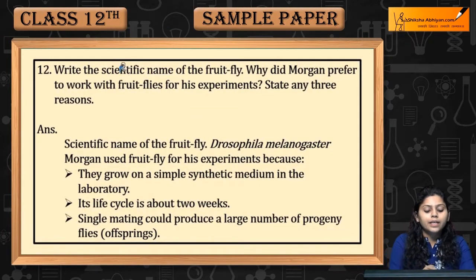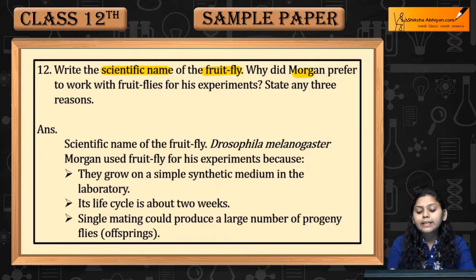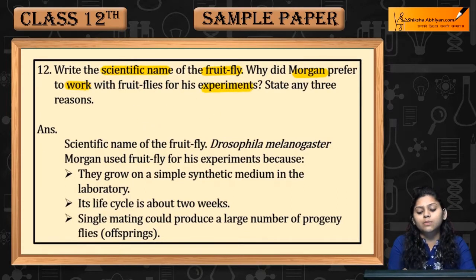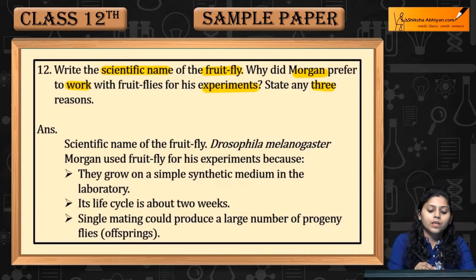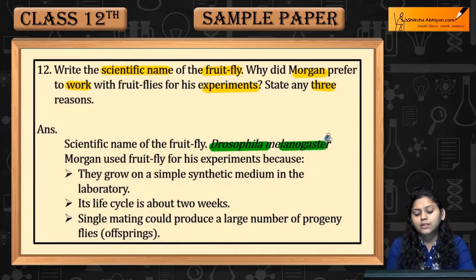Question 12: Write the scientific name of the fruit fly. Why did Morgan prefer to work with fruit flies for his experiments? State any three reasons. The scientific name of the fruit fly is Drosophila melanogaster.